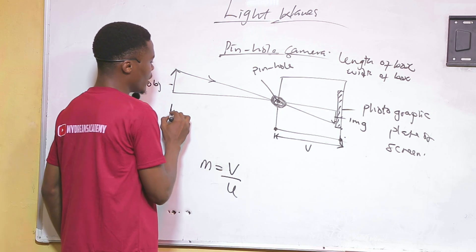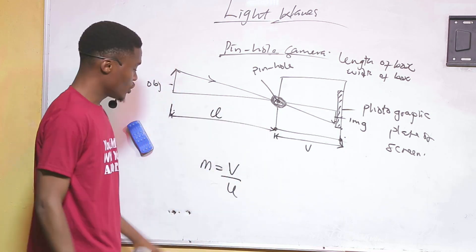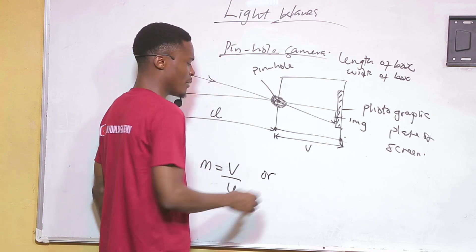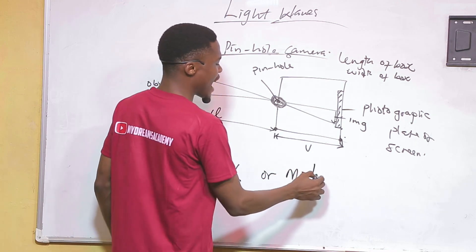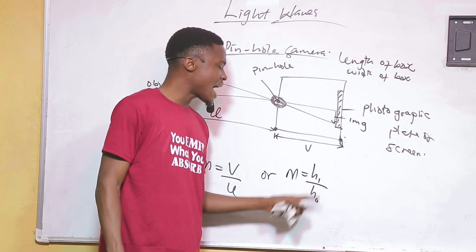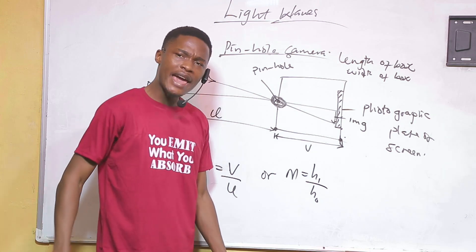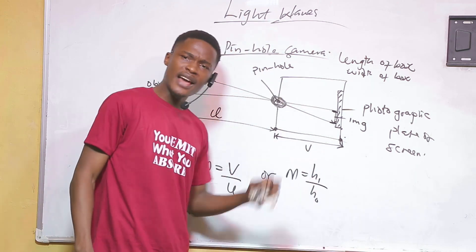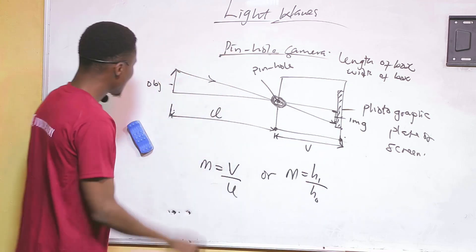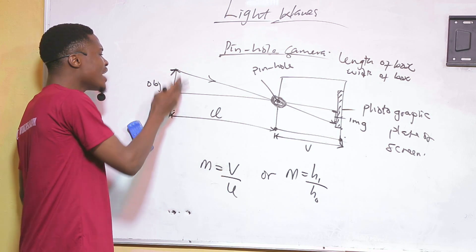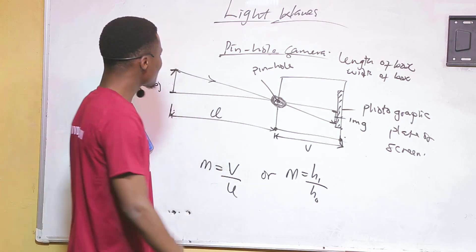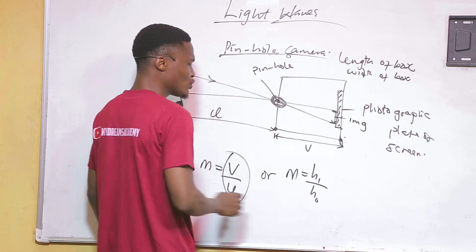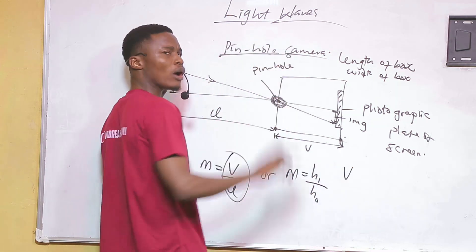The distance between the object and the pinhole is the object distance, represented by U. So M = V/U gives magnification. Alternatively, we can use the formula: magnification equals Hi over Ho, where Hi is the height of the image and Ho is the height of the object in front of the pinhole camera.